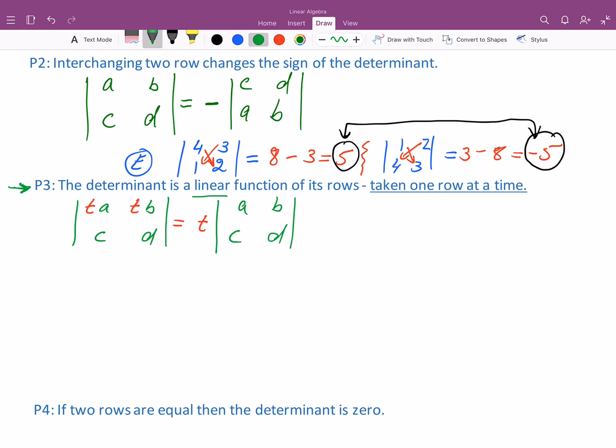The other piece of linearity is about adding rows. So if I were to say, let me say I have A plus alpha, B plus beta, and then C, D. And then I'm going to have two other determinants here.